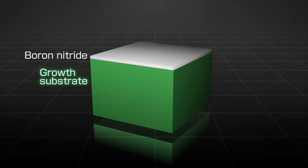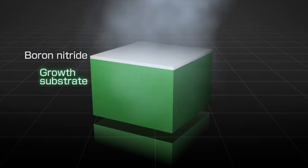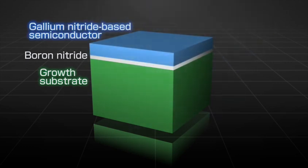Unlike other nitride semiconductors, boron nitride takes a layered structure, same as graphite, and hence is cleavable. We developed a technique of growing high-quality layered boron nitride thin film on the substrate and also growing high-quality gallium nitride-based thin films on the boron nitride.